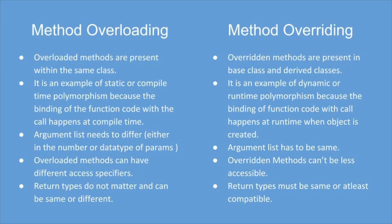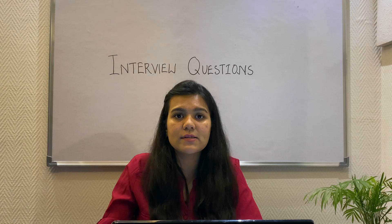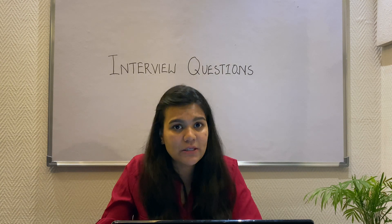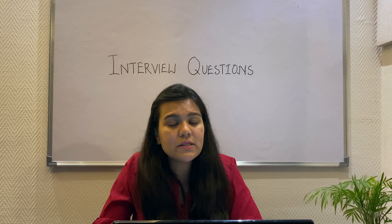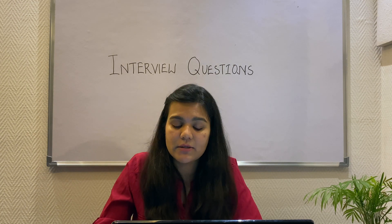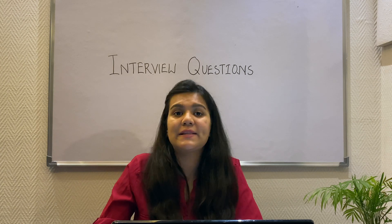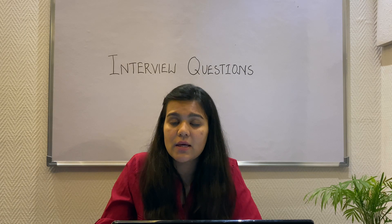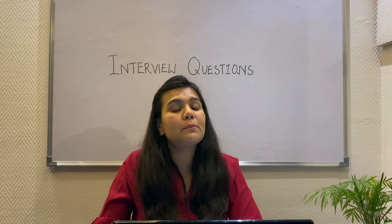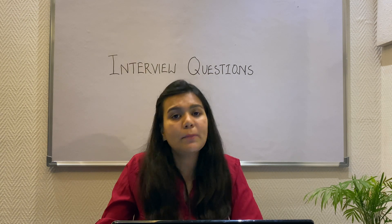In method overloading, the argument list needs to differ. So in two or more methods with the same name, the argument list has to be different — the difference can be in the number or type of parameters. In overriding, the arguments have to be the exact same match. In method overloading, the overloaded methods can have different access specifiers, meaning one can be public while the other can be private.